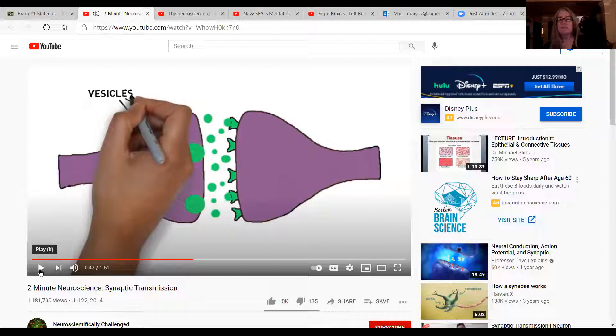Remember this presynaptic neuron, that's the terminal buttons is where we are. The postsynaptic neuron, that's the dendrites of where we are. I'm trying to kind of put this into perspective of where we are.